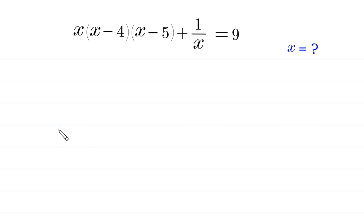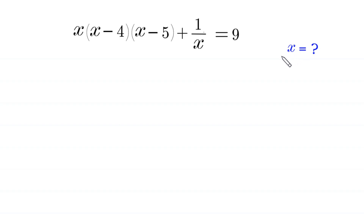Hello everyone, welcome. We will solve the algebra equation: x times (x minus 4) times (x minus 5) plus 1 over x is equal to 9. Our job is to find all possible values of x. Let's start by multiplying both sides of this equation by x.